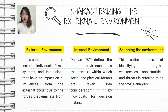Strengths refer to what the company does well, such as having a strong brand, loyal customers, or unique products. Weaknesses are areas where the company struggles, like outdated technology, high costs, or weak customer service. Opportunities are external factors the company can take advantage of, such as new market trends, untapped markets, or emerging technologies. Threats are external challenges that could harm the business, like new competitors, changing regulations, or economic downturns.